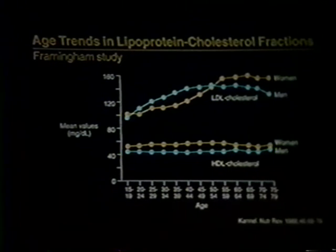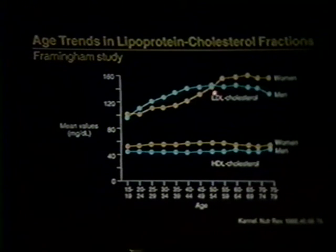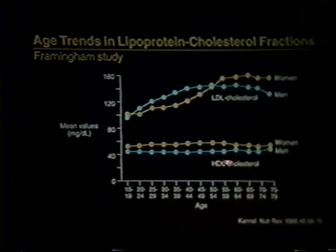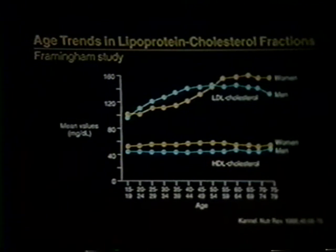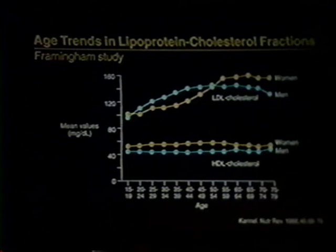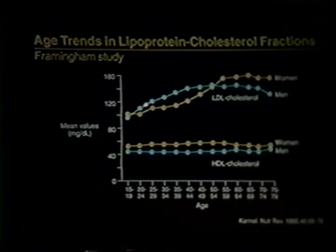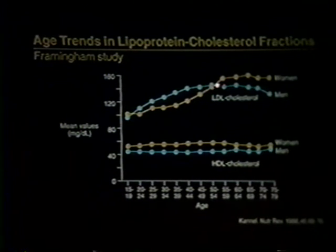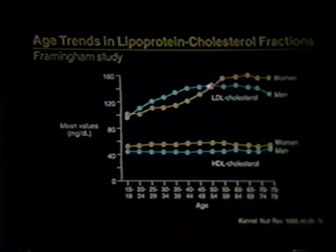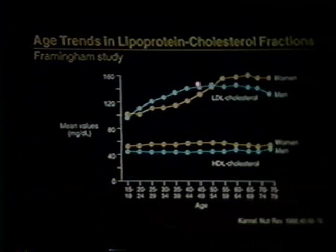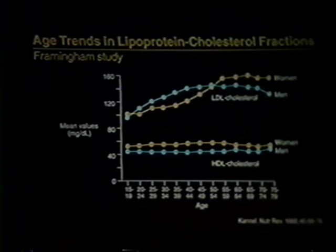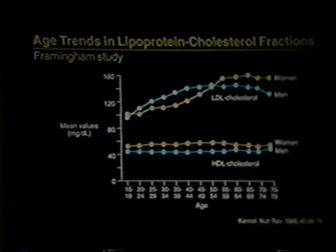Total cholesterol equals LDL cholesterol — the bad one, I think of the L as meaning 'lousy' — plus HDL, the good one, where H means 'healthy.' The reason total cholesterol goes up after age 20 is because the LDL goes up, and it goes up more rapidly in men. After menopause it's higher in women — possibly because men with higher levels earlier in life are no longer available to be studied. HDL and estrogen stay about the same in most of us throughout our lives.